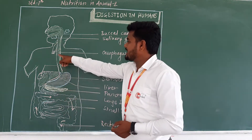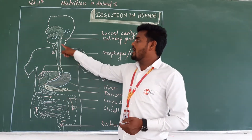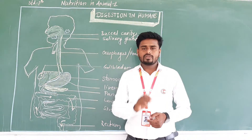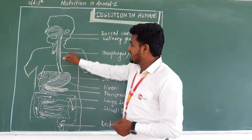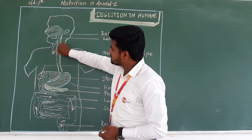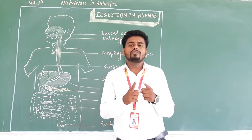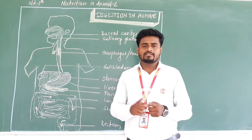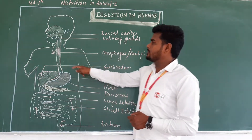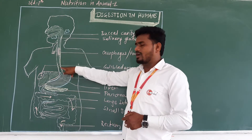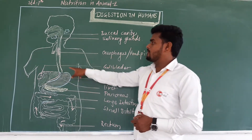That bolus is pushed into the esophagus with the help of the tongue. Here is the esophagus — it is a long muscular organ. The food travels through the esophagus by its muscular movement. The esophagus is also called the food pipe, because it is the pipe through which food travels.